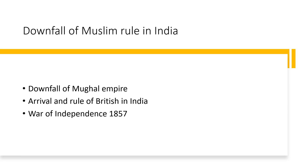We will divide this huge topic into three subtopics. First, we will study the downfall of the Mughal Empire — how it weakened, fragmented, and was destroyed completely. Then we will study the arrival and rule of the British in India, which was the prime reason behind the downfall of Muslim rule. Then we will study the War of Independence of 1857, which was the final crunch to Muslim rule in India.